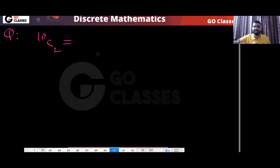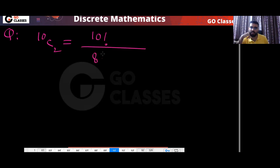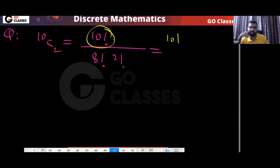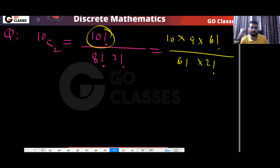So tell me what will be 10C2. That means 10 factorial divided by 8 factorial into 2 factorial. You can write 10 factorial as 10 into 9 into 8 factorial, divided by 8 factorial into 2 factorial. Cancel the 8 factorials. So finally your answer will be 10 into 9 divided by 2, which is 45. So 10C2 is 45.